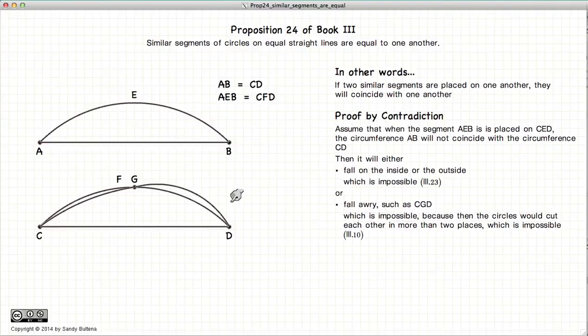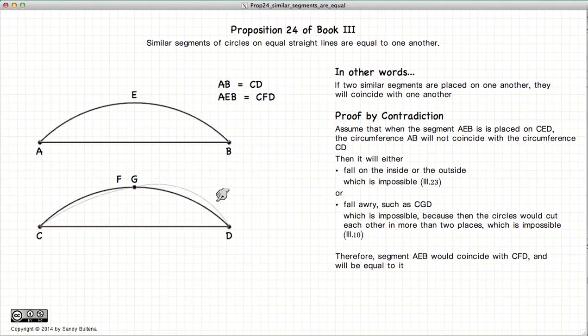So if it cannot be inside or outside, or a little bit weird like this one, then they must lie on top of each other. So if AEB lies perfectly on top of CFD, then these two circle segments are equal to one another, since they would coincide if laid on top of each other.